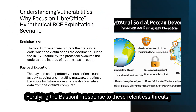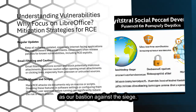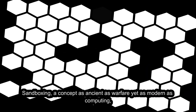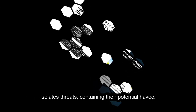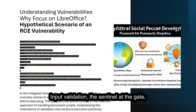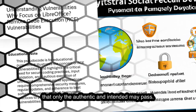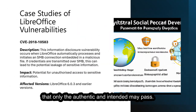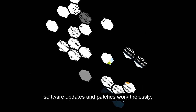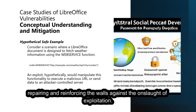In response to these relentless threats, many countermeasures and best practices stand as our bastion against the siege. Sandboxing — a concept as ancient as warfare yet as modern as computing — isolates threats, containing their potential havoc. Input validation, the sentinel at the gate, scrutinizes every piece of data and command, ensuring that only the authentic and intended may pass. And atop the ramparts, the vigilant sentries of software updates and patches work tirelessly, repairing and reinforcing the walls against the onslaught of exploitation.